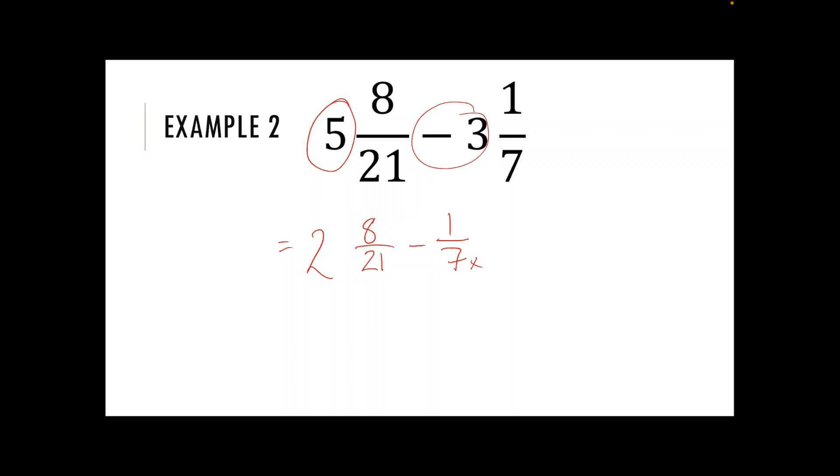Like before we said that seven threes give us 21, so I'm going to need to times the top by three as well. So I've got two and eight twenty-ones take away three over 21. Two stays the same. Eight subtract three is five and 21 stays as it is. I cannot simplify that fraction anymore. So two and five over 21 is my final answer.